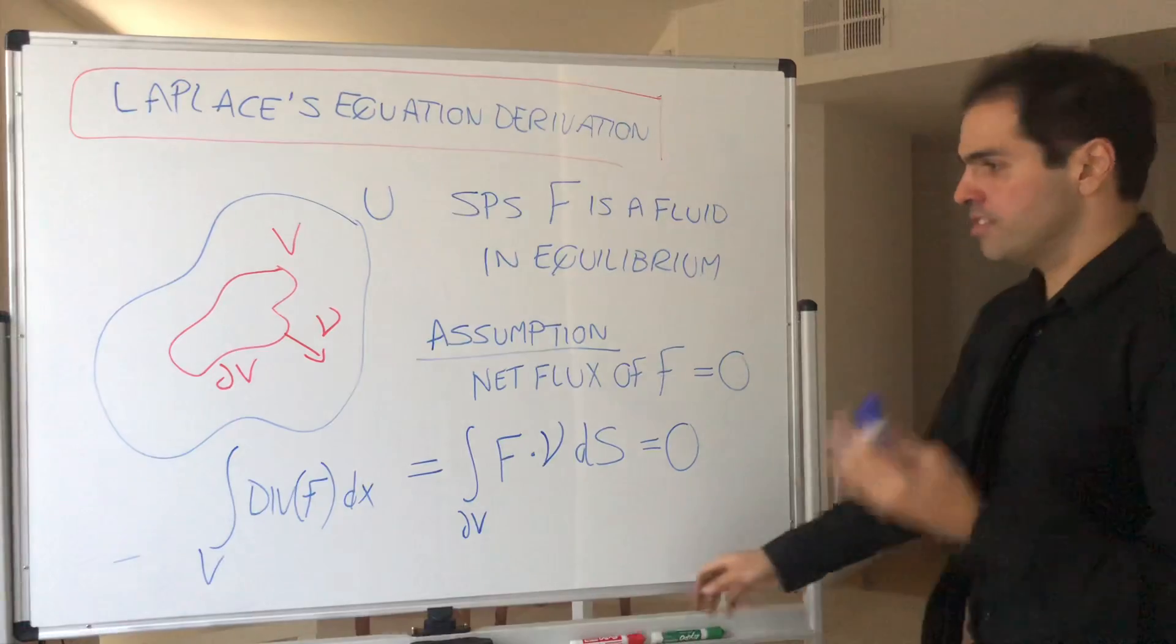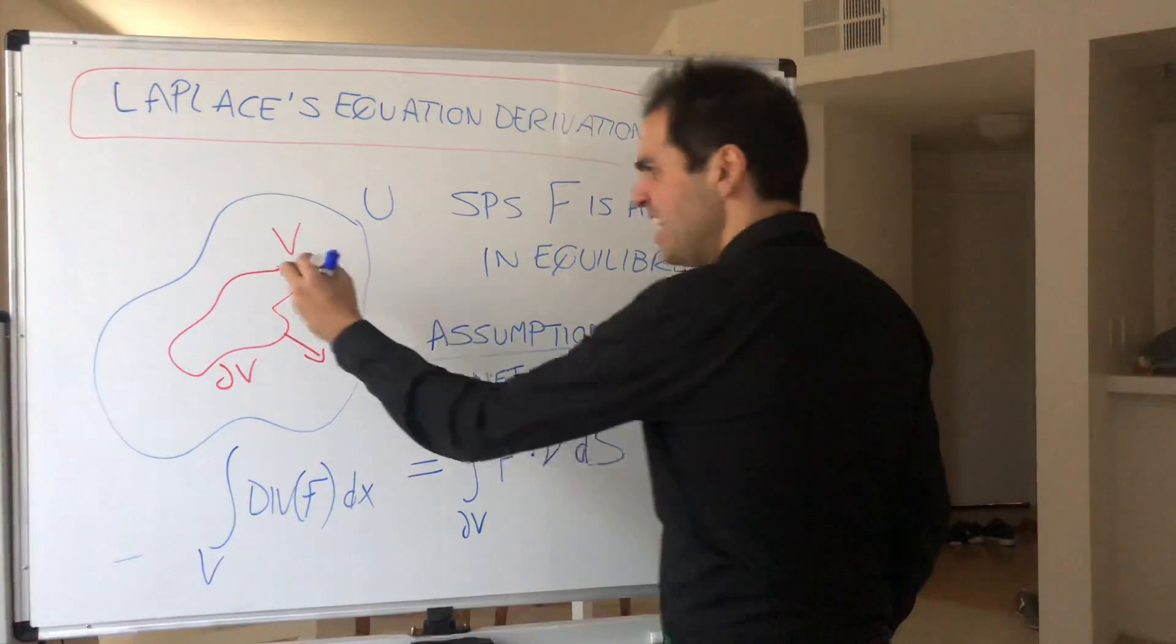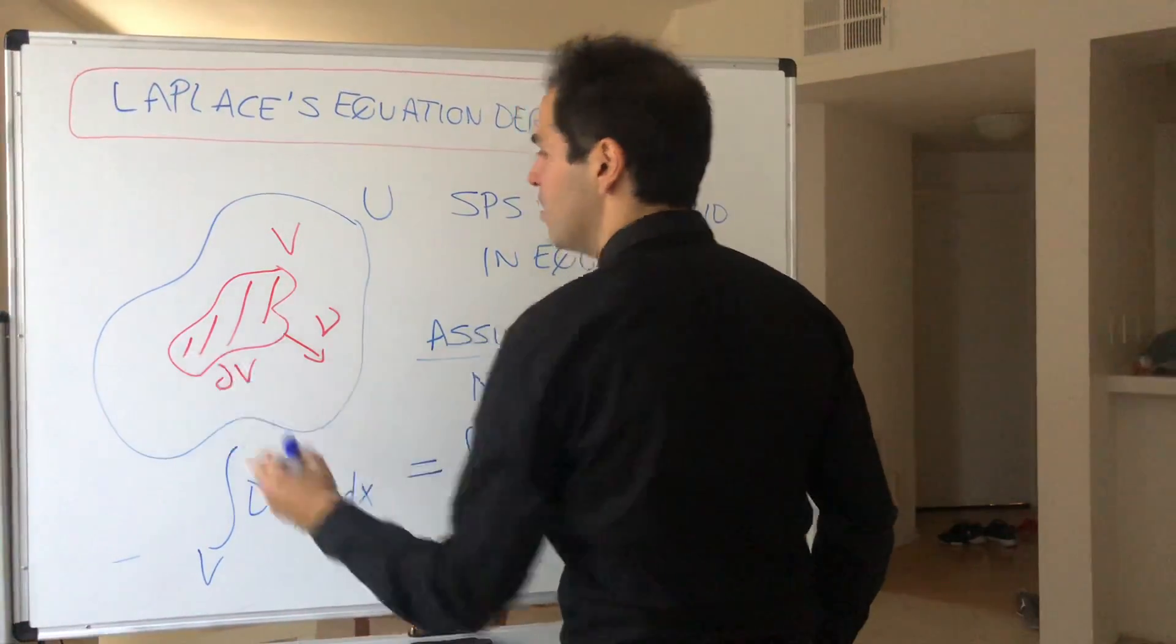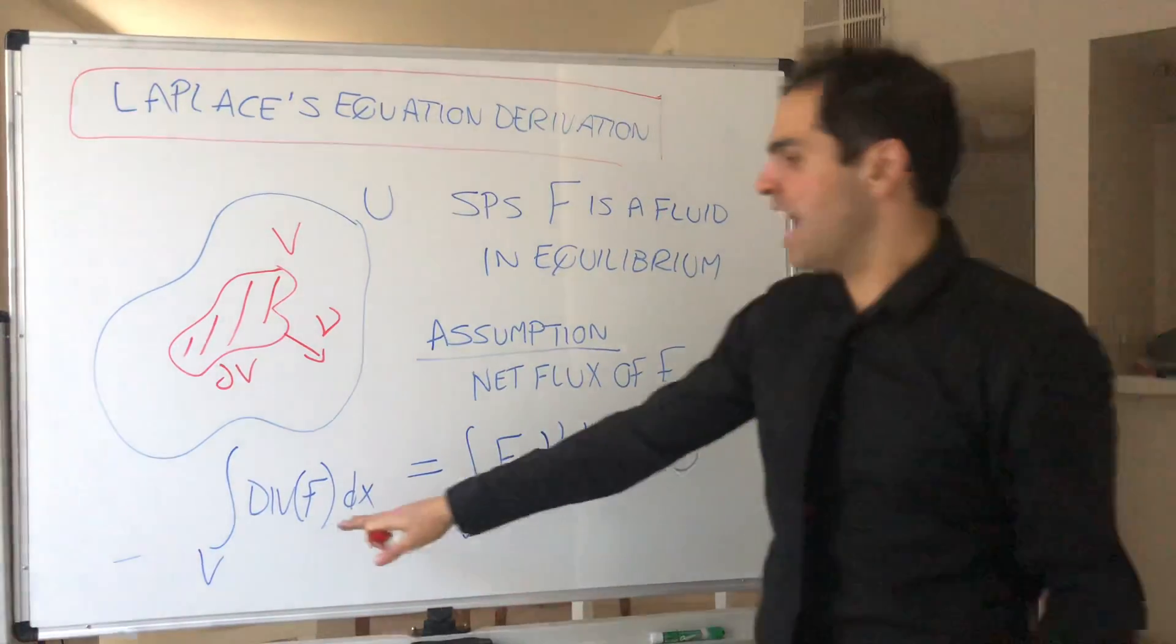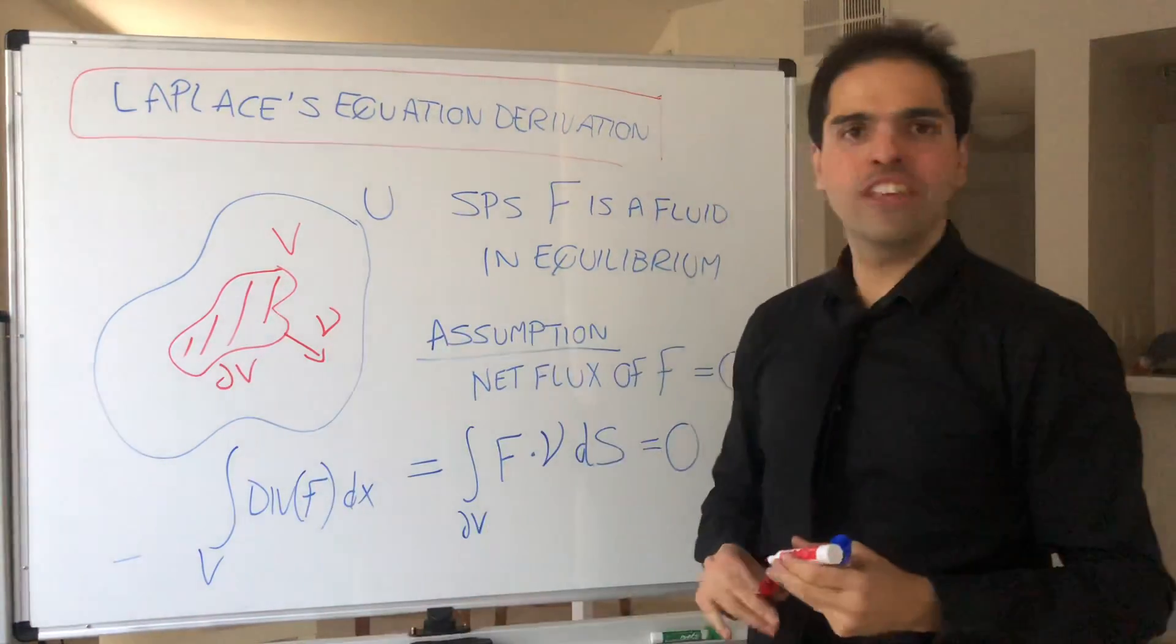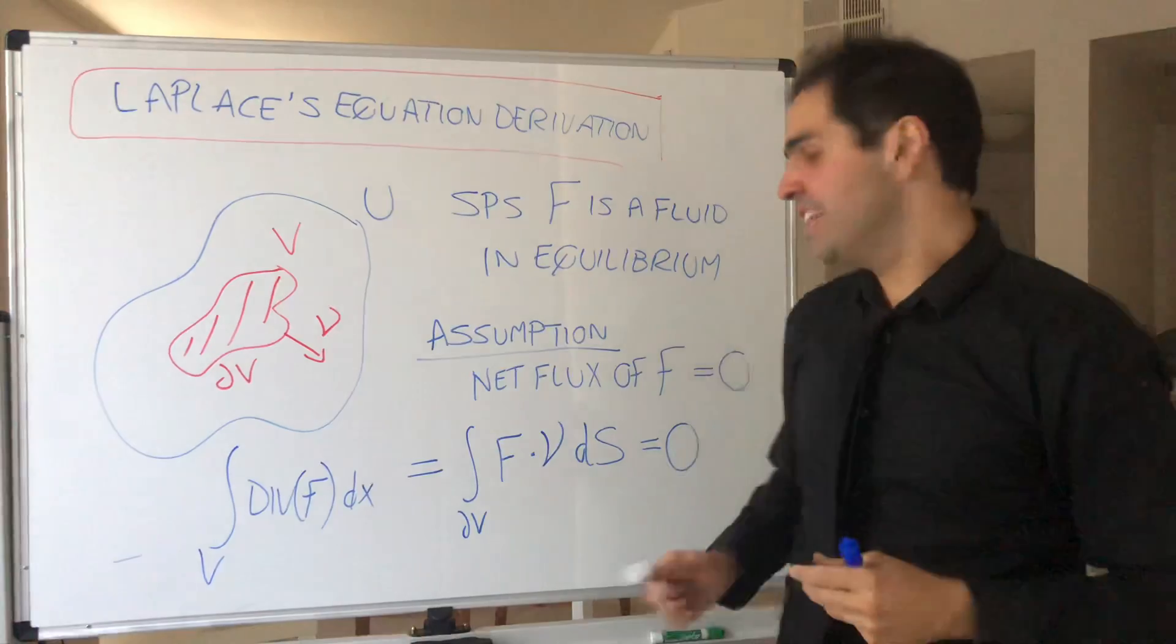So, in other words, it's quite interesting. If you take any sub-region of U and you integrate the divergence of F over that region, you ultimately get zero.